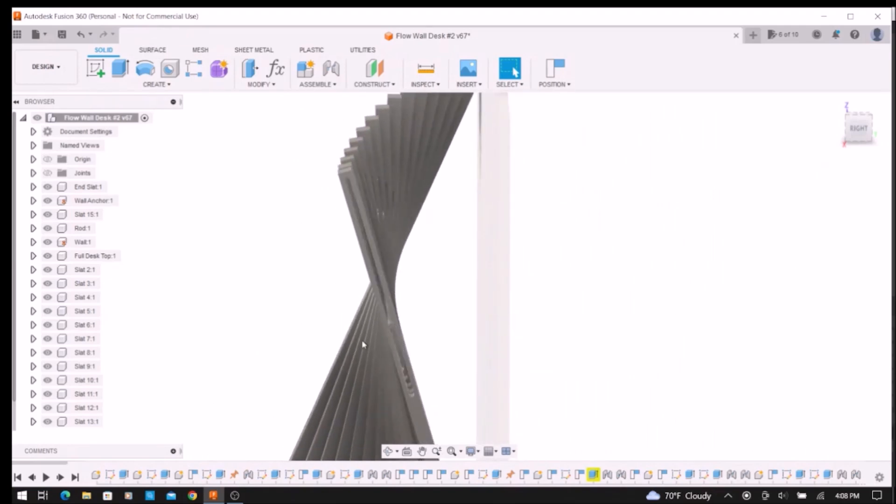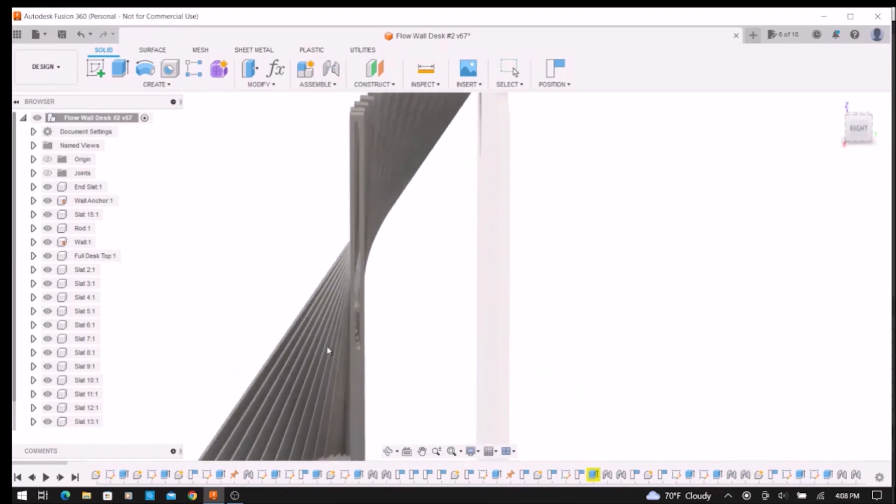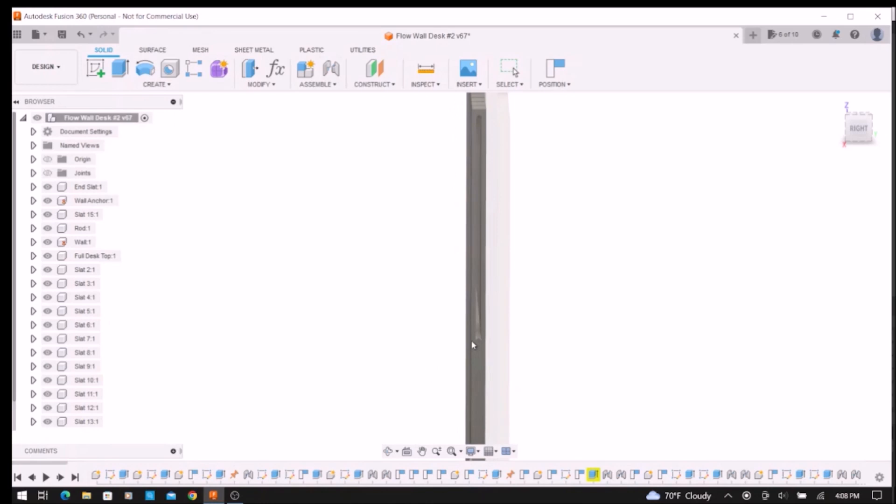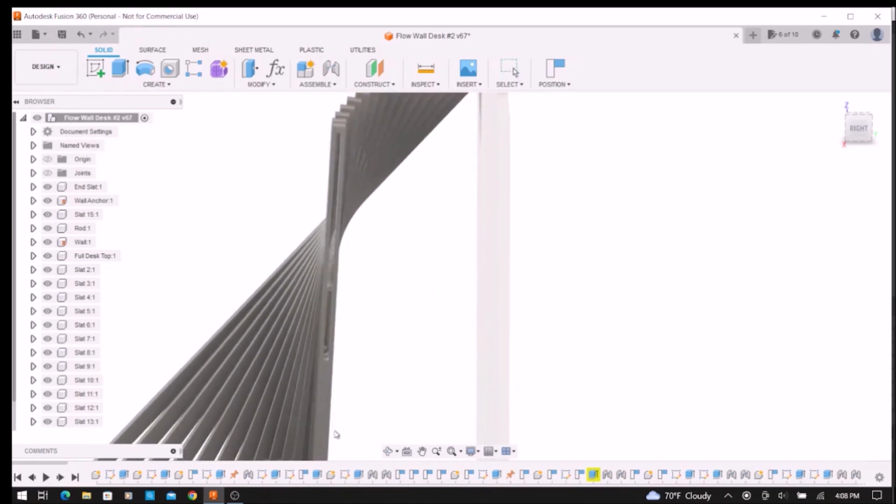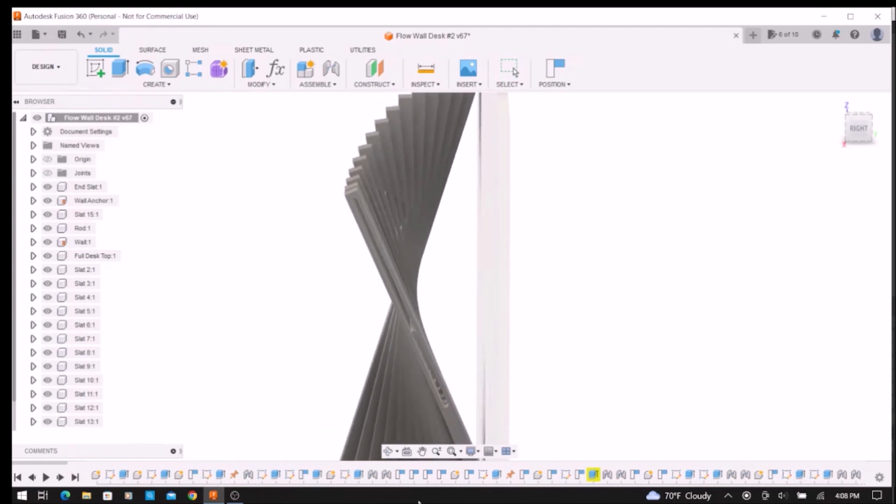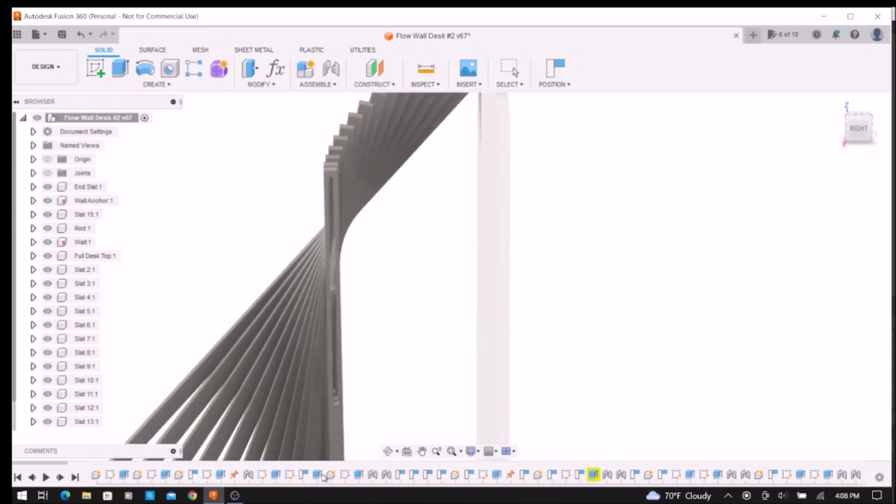I found it remarkable how well the Fusion 360 model predicted the actual motion of the project with these simple revolution and pin slot joints.